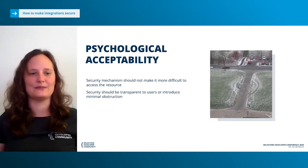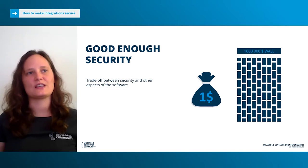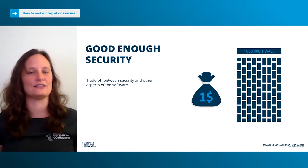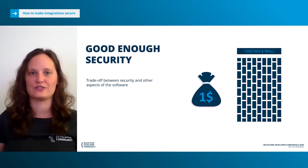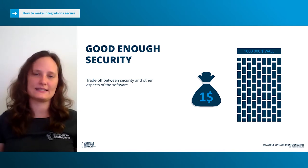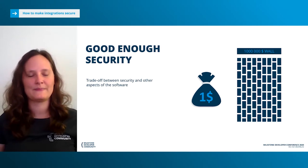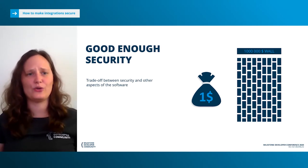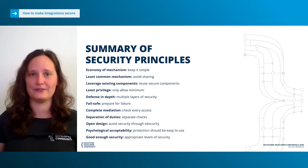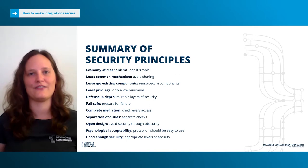The last principle is called Good Enough Security, meaning there is a constant trade-off between implementing security features and other features in the software. Does it make sense to implement a state-of-the-art security system for something that's not worth securing at all? So we've covered quite a lot of principles, and I've written a short summary so you can have a quick overview of what we've talked about.